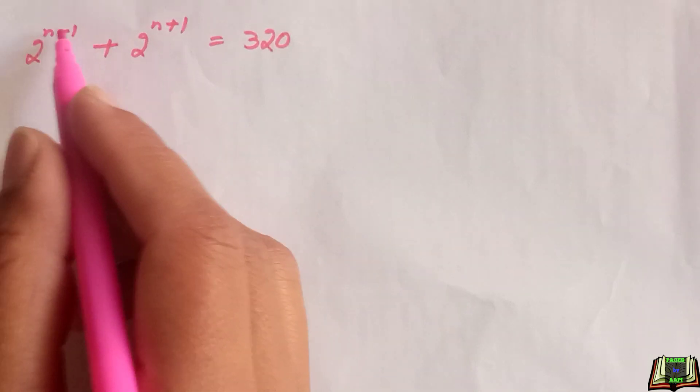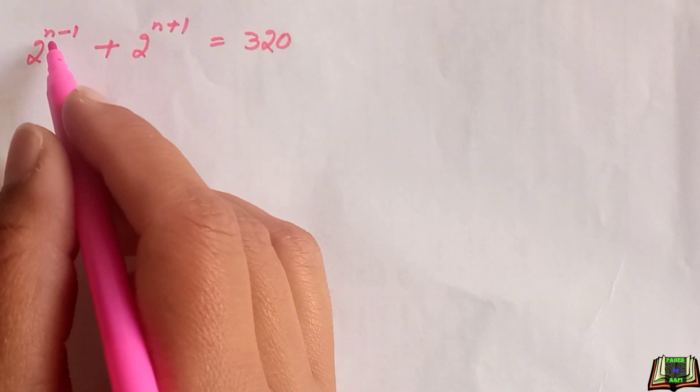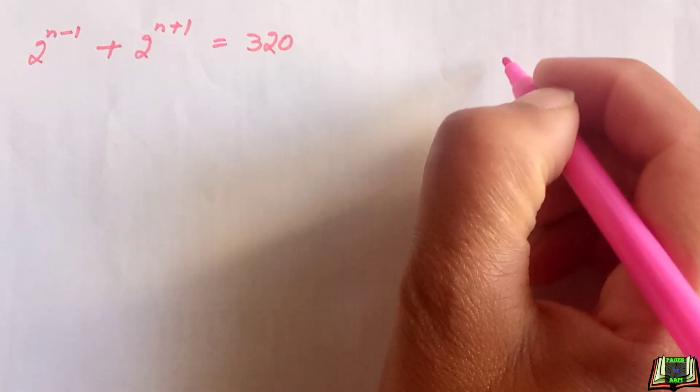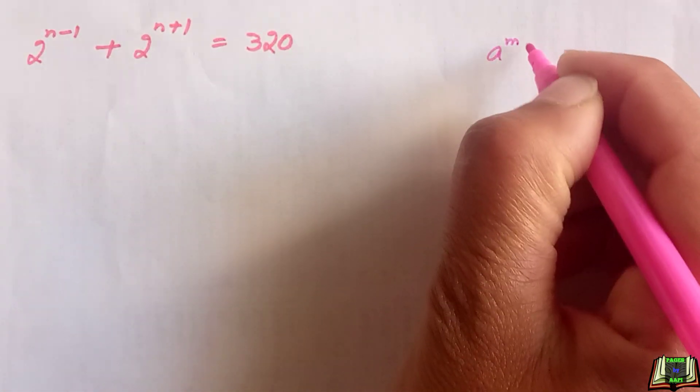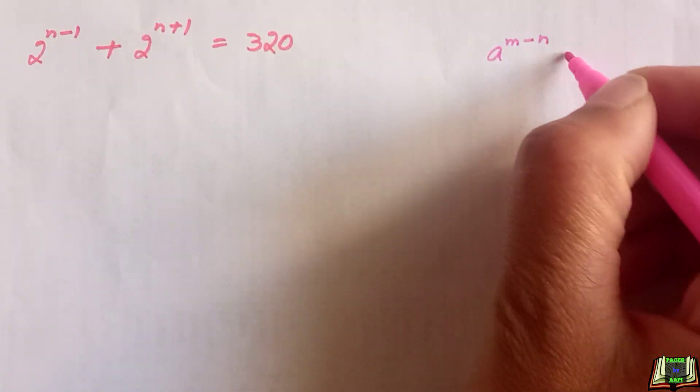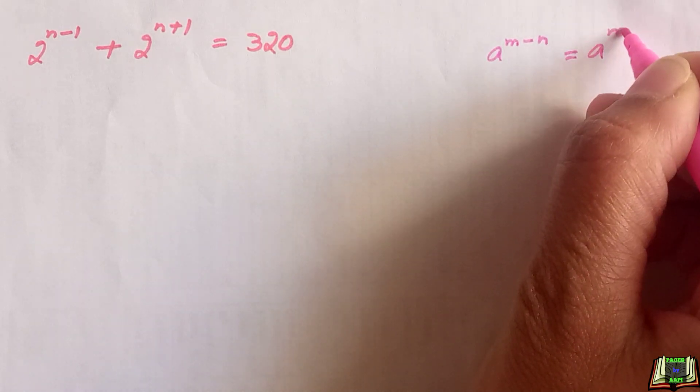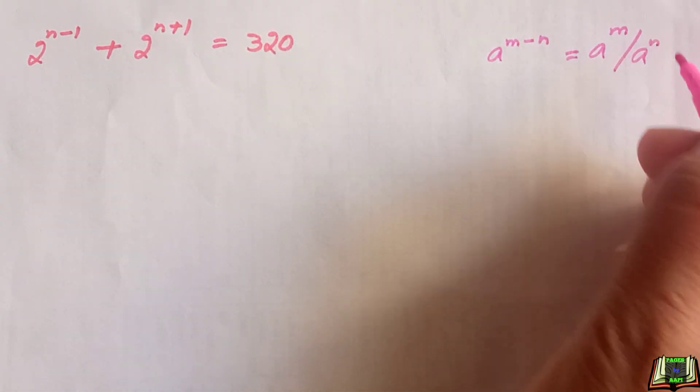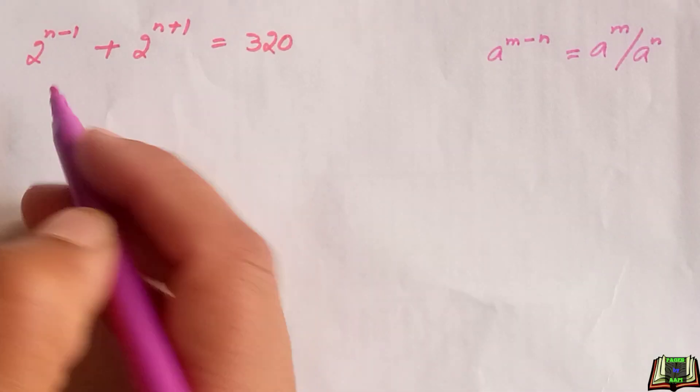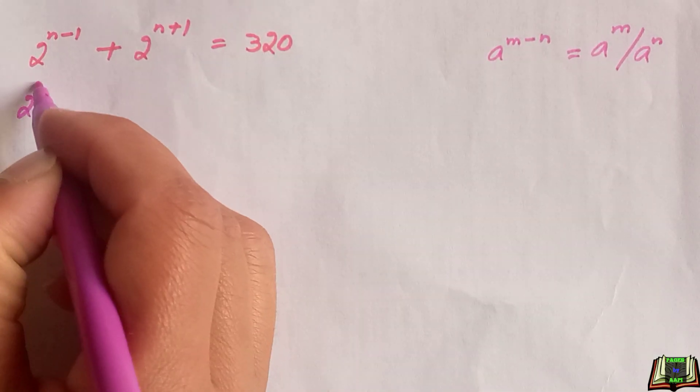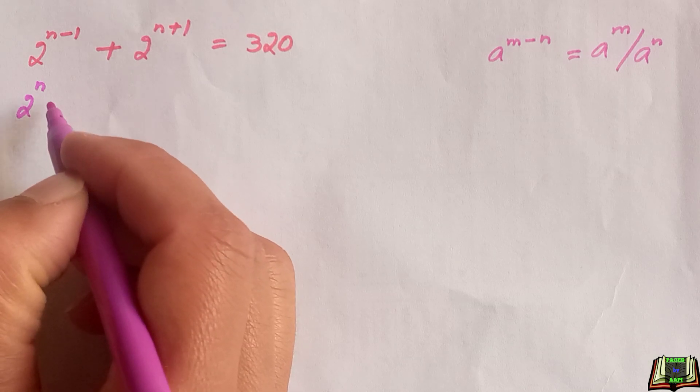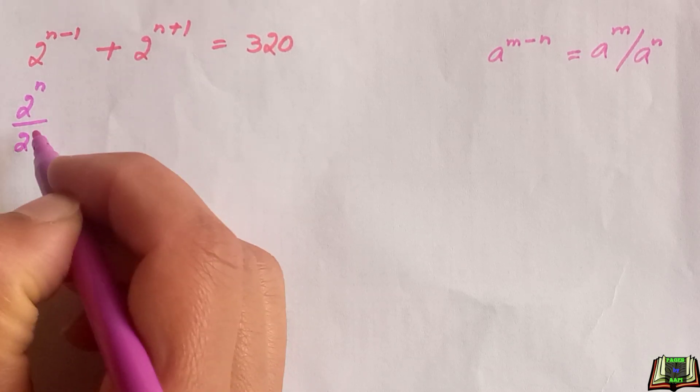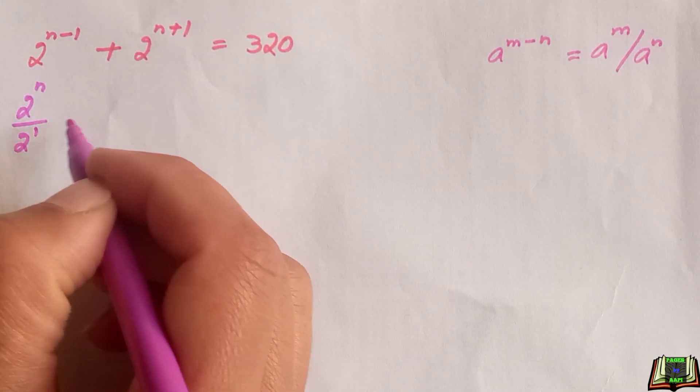We are going to expand these powers. For the first part, 2 raised to power n minus 1, we are going to use the quotient rule of powers that says if a raised to power m minus n, then this is equal to a raised to power m divided by a raised to power n. So we can write this as 2 raised to power n divided by 2 raised to power 1.